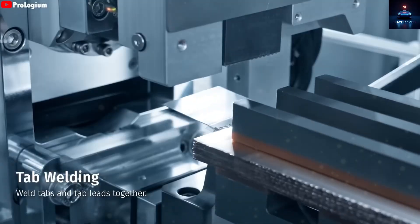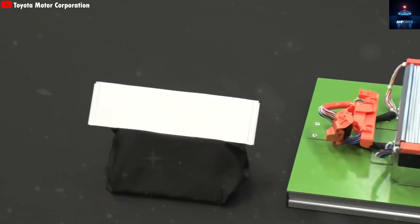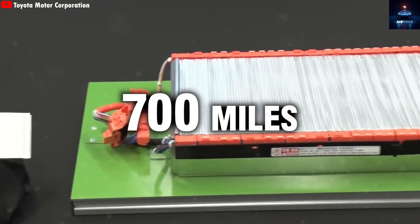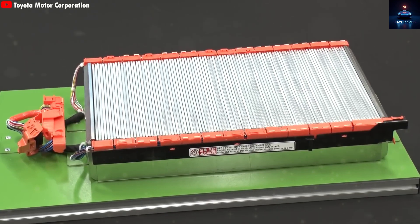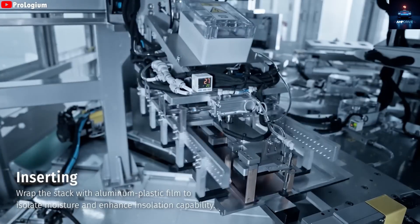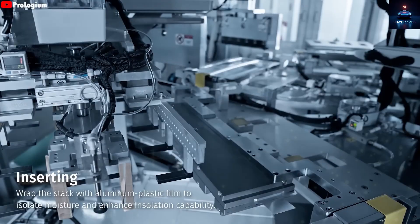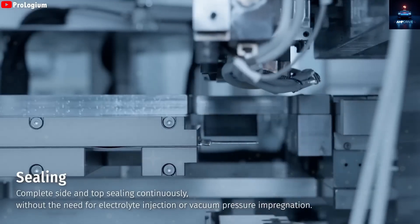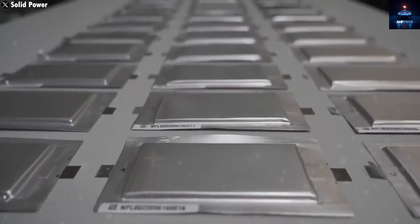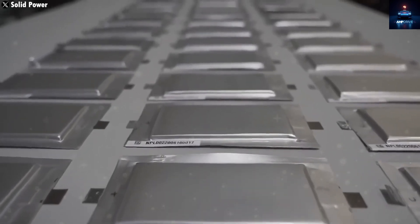Toyota claims that its solid-state batteries will offer a driving range of around 700 miles and will be able to fully charge in just 10 minutes. They believe that this could make solid-state batteries more widely used than Tesla's 4680 cells and suggest that Elon Musk could fall behind if he does not adopt solid-state technology soon.